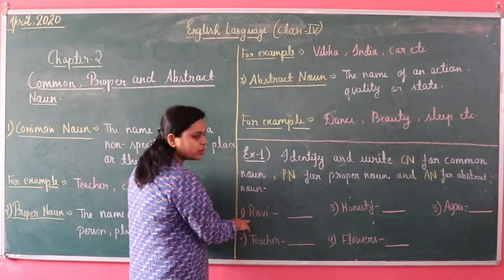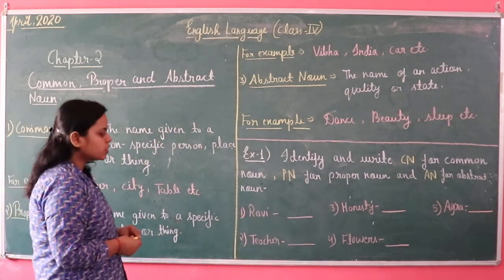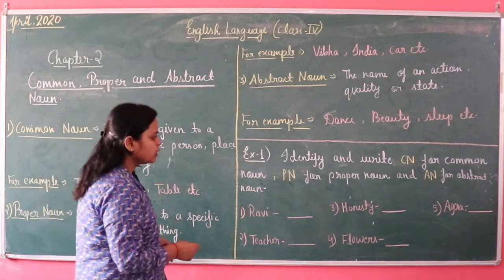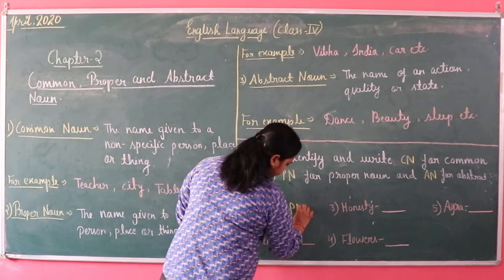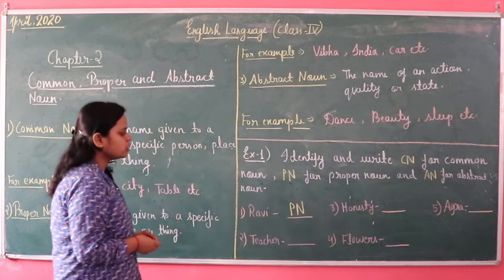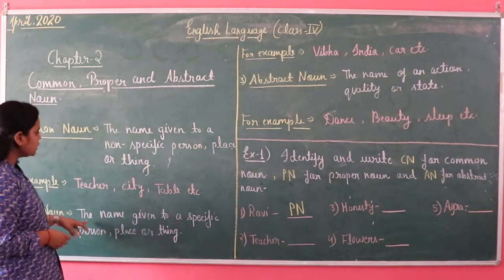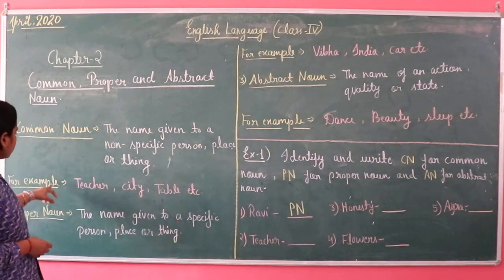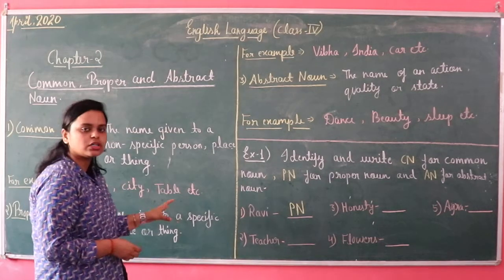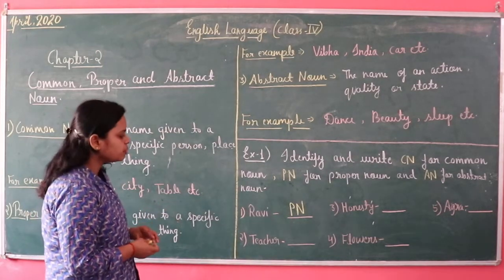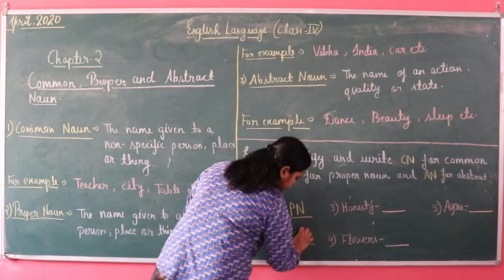For example, Ravi. Ravi is a specific name given to a person, so that will be proper noun. Next, teacher. As you already studied, teacher is an example of common noun, because it is the name of a group, not a specific person, place, or thing. So this will be common noun.